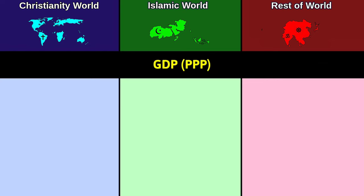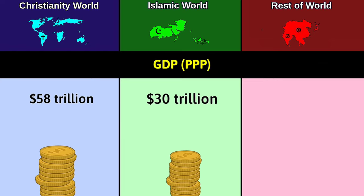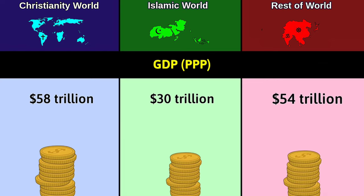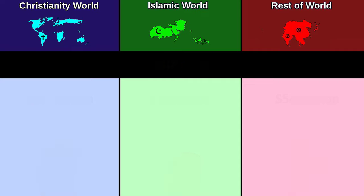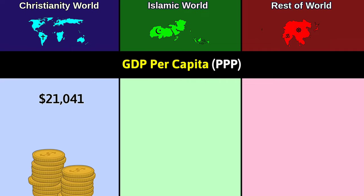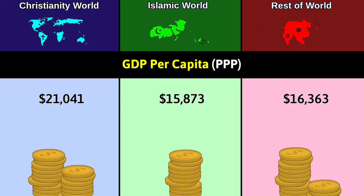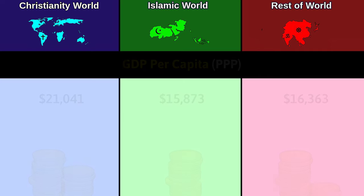GDP PPP: Christianity world 58 trillion dollars; Islamic world 30 trillion dollars; Rest 54 trillion dollars. GDP per capita for PPP: Christianity $21,041; Islam $15,873; Rest $16,363.